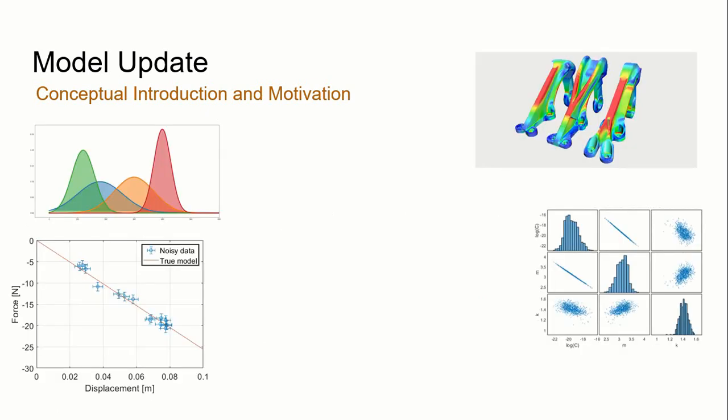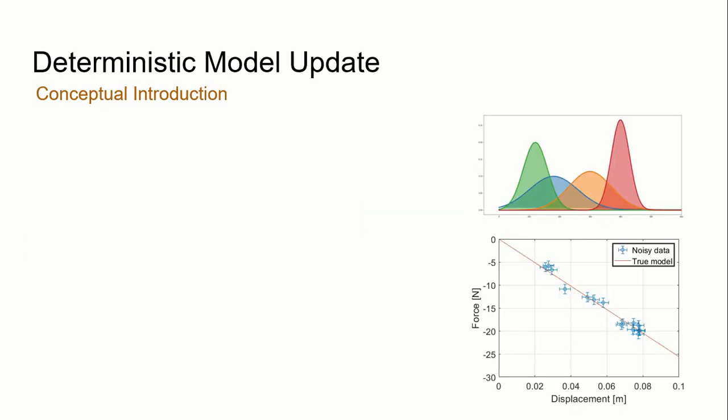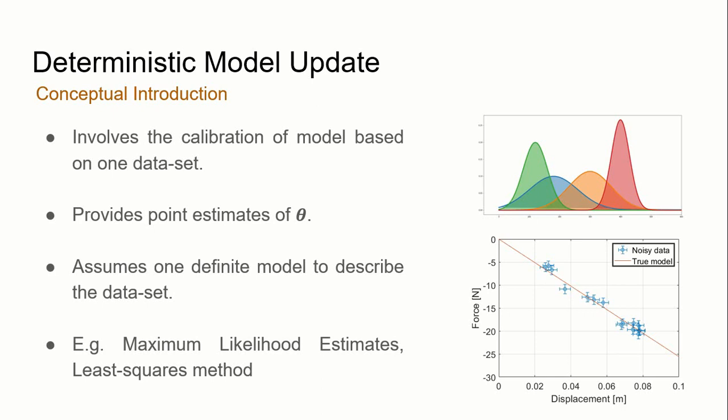Model updating falls into two different categories. And these two categories are deterministic and probabilistic. I will first go through the concept of deterministic model updating. In deterministic model updating, it involves the calibration of a model that is based on one fixed dataset. And from there, point estimates of theta are given.